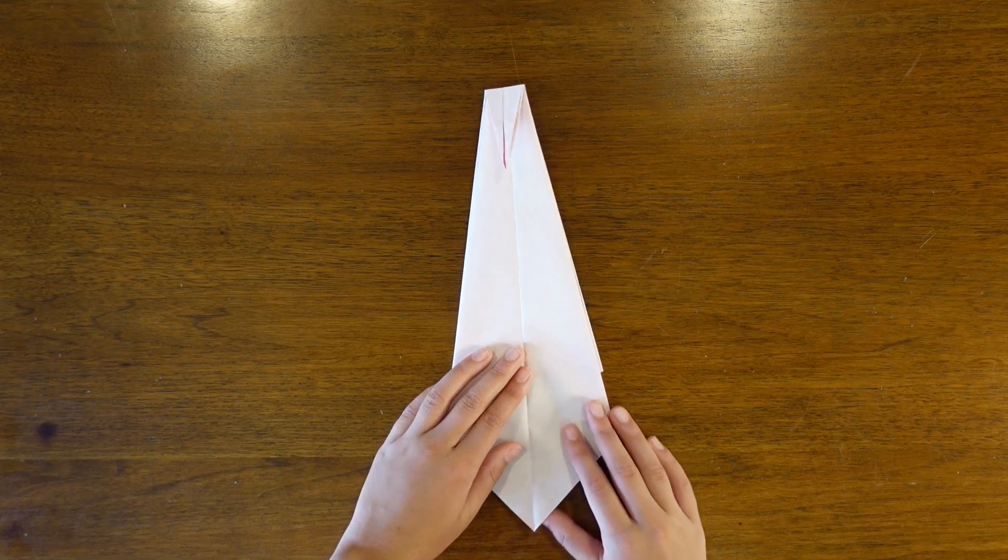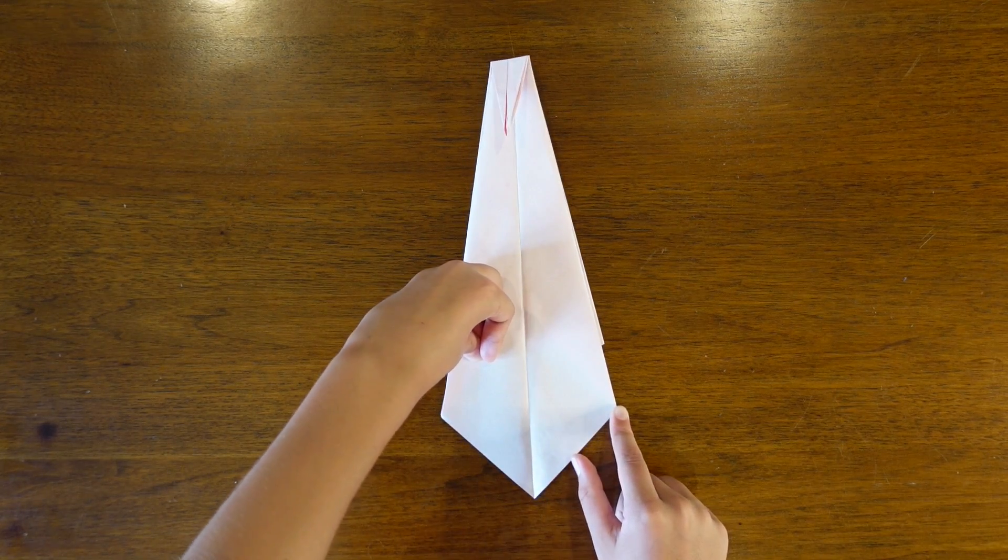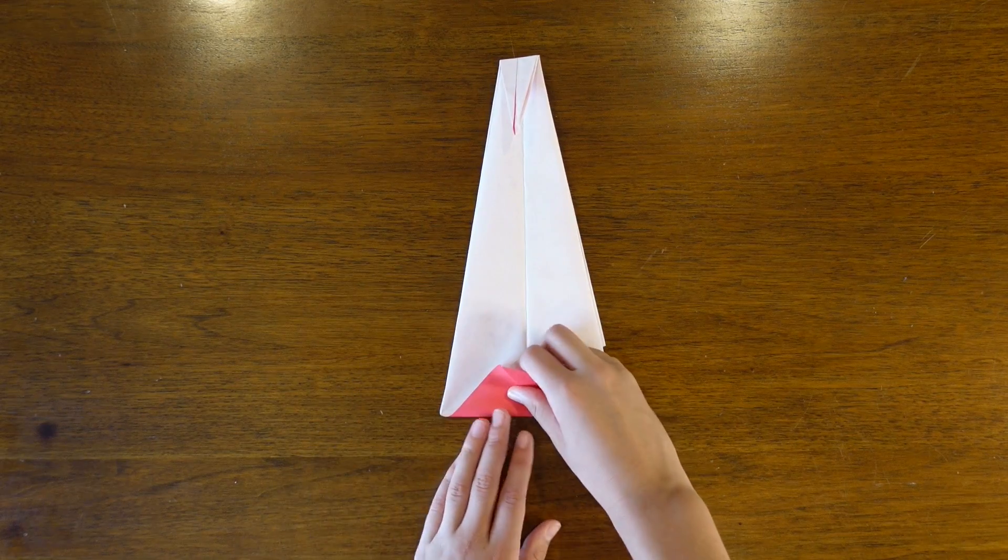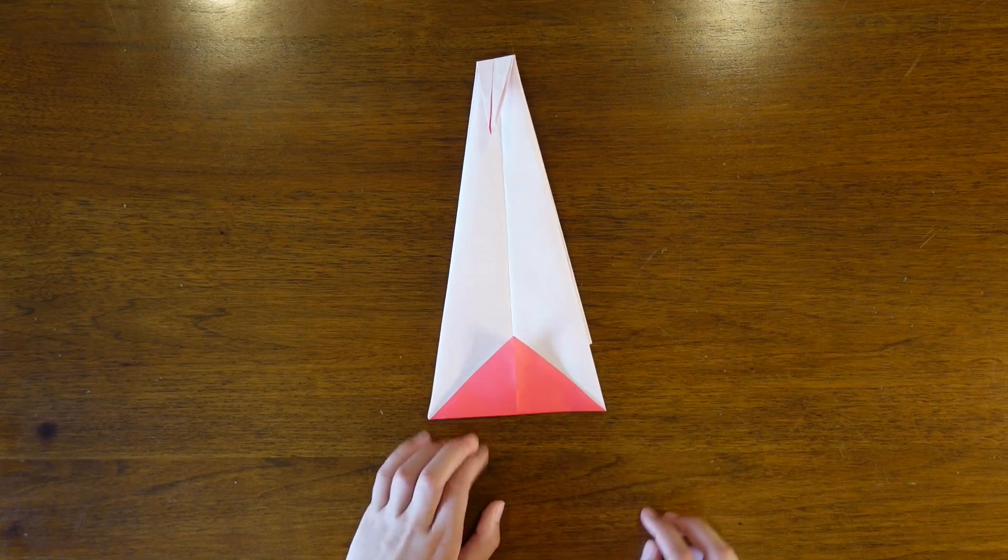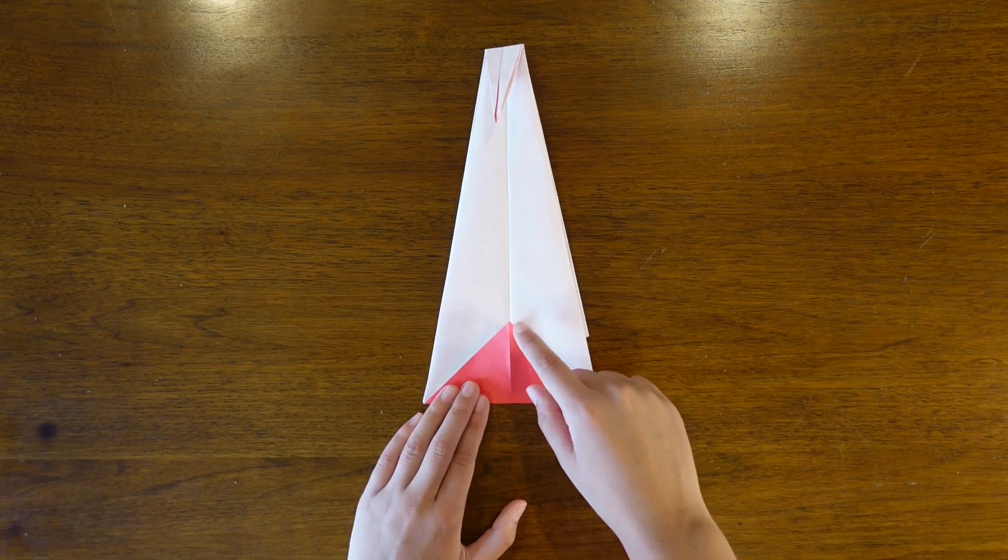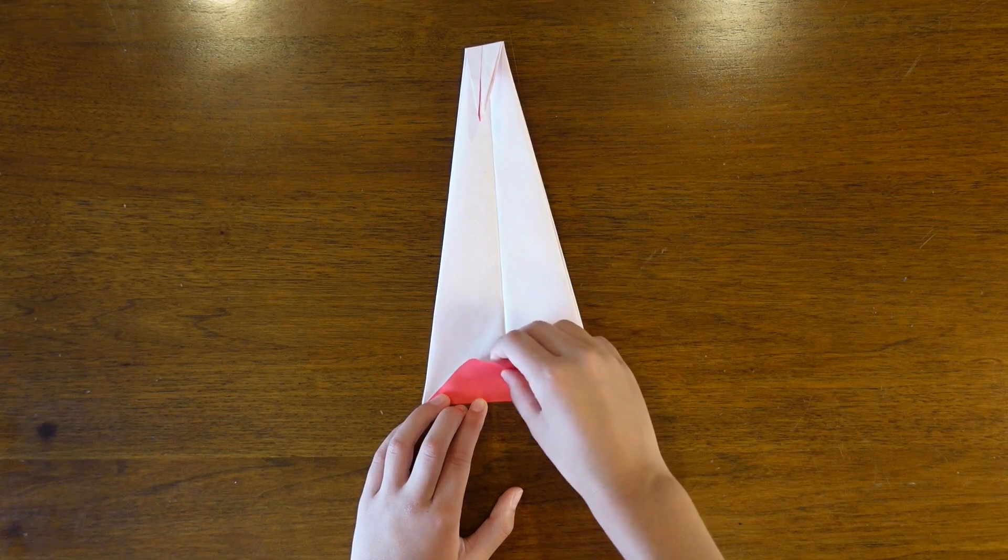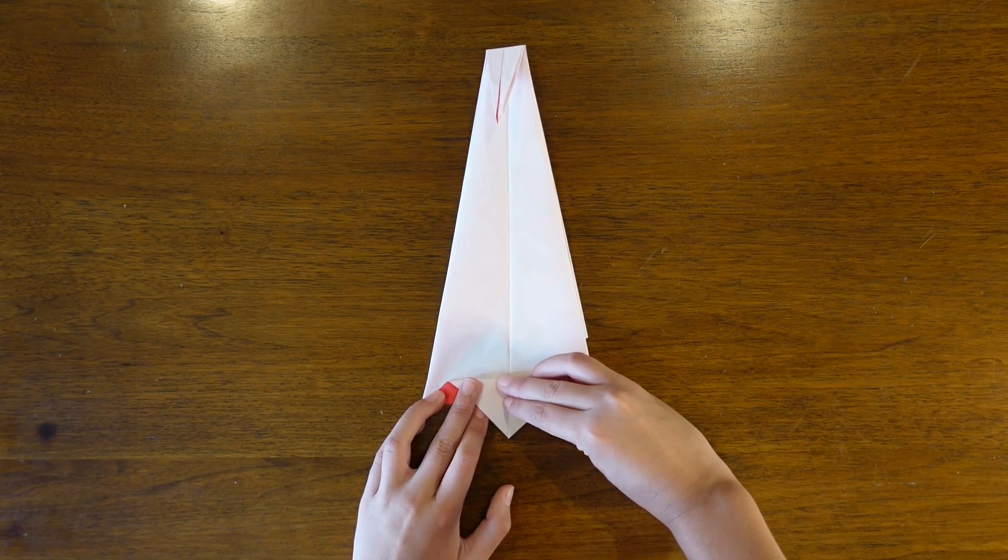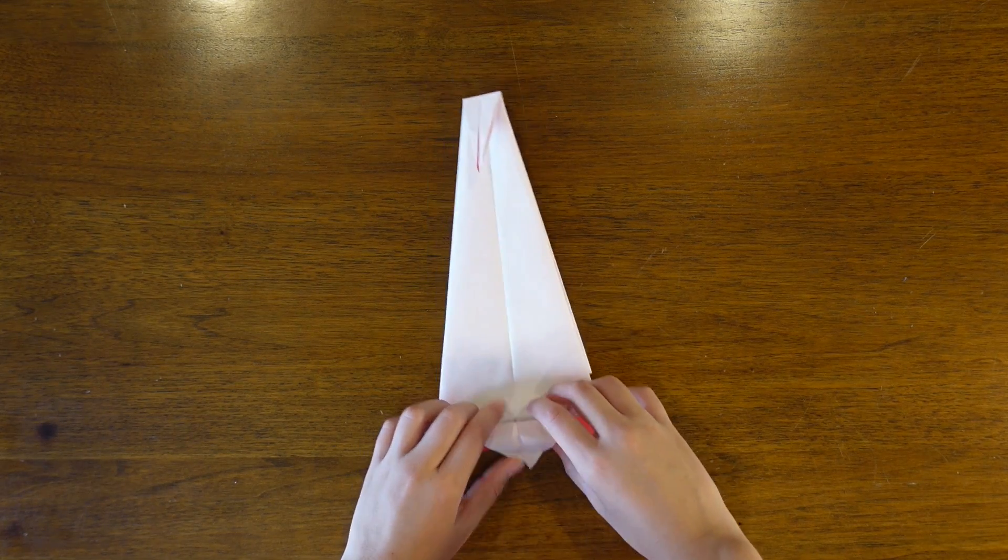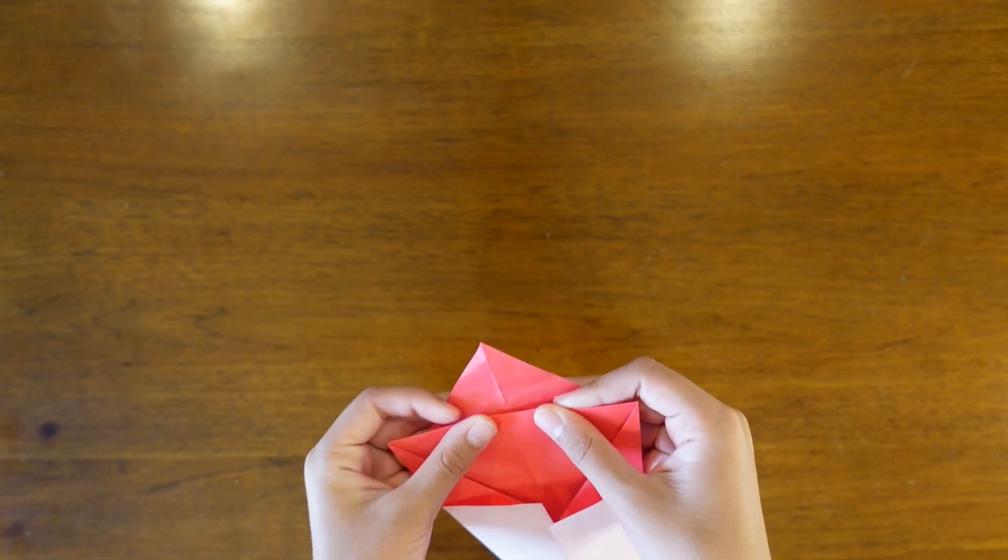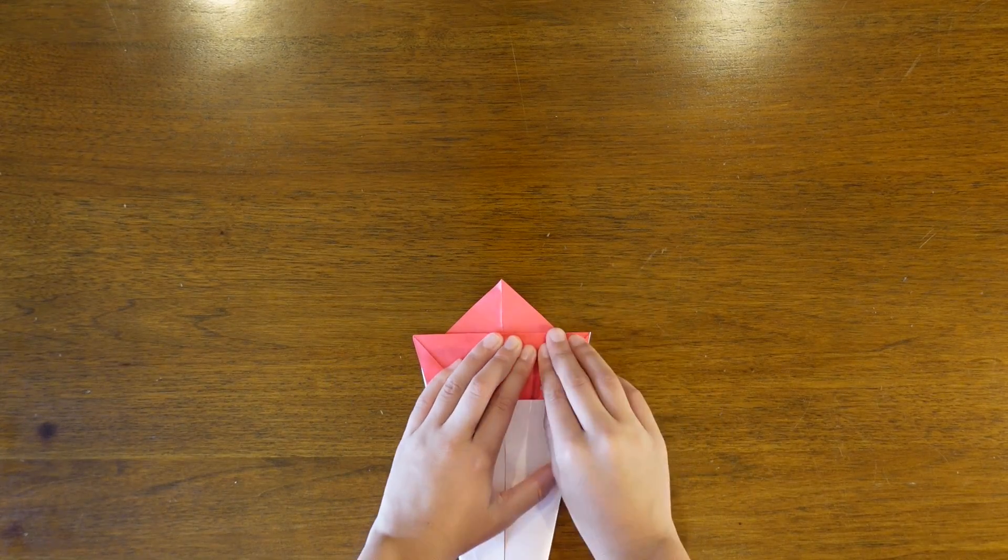Now turn the model over and fold the edge down until it hits the point on both sides. Now we're going to fold the tip up a little bit for where you think the flame should be or where you think it would look right. I'm doing it like that.